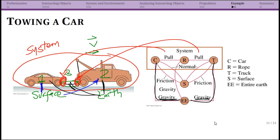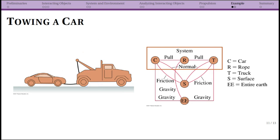How many free body diagrams are we going to draw? In this case, three — because there are three separate objects in our system. We don't need to draw free body diagrams for the surface or the earth because those are in our environment. On the next slide I'll show the book's free body diagrams, but let's make some progress first. Let's start by drawing the car.